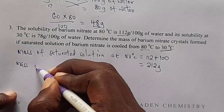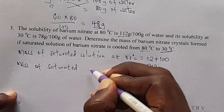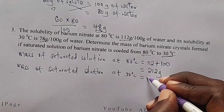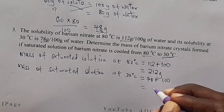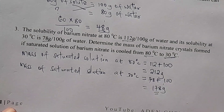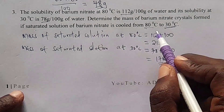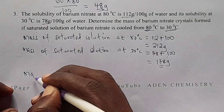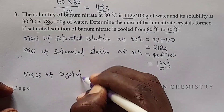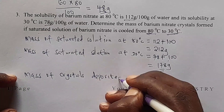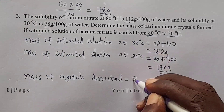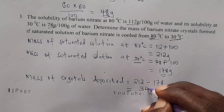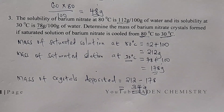The mass of saturated solution at 30 degrees Celsius: 78 plus 100 gives 178 gram. The mass of crystals deposited when barium nitrate is cooled from 80 degrees Celsius to 30 degrees Celsius will be 212 minus 178, which gives 34 gram of barium nitrate deposited.